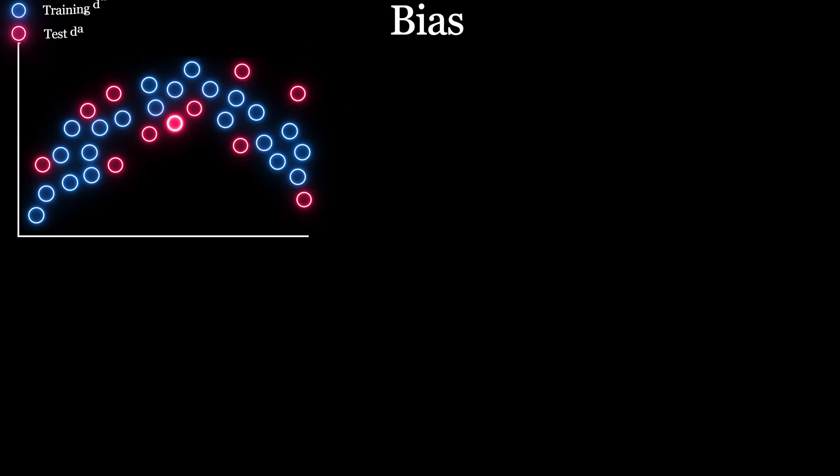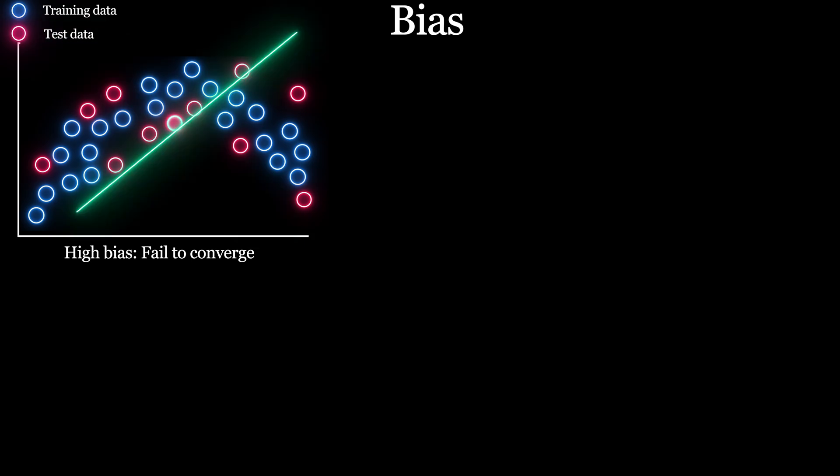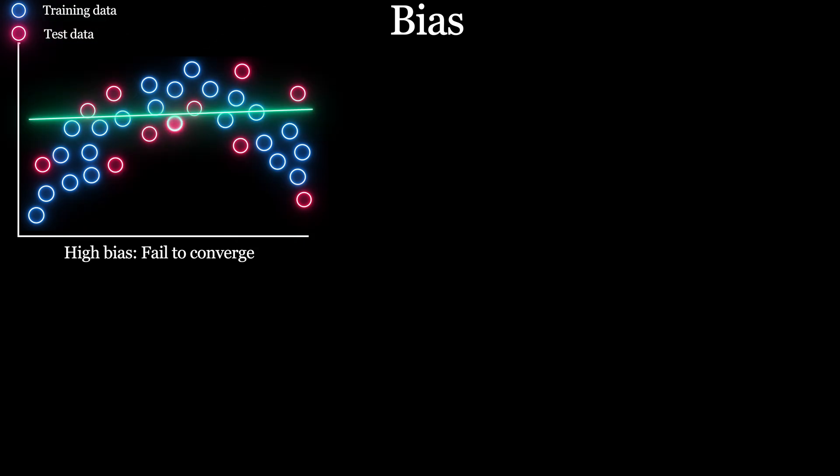A simple model has higher bias due to which it makes a lot of assumptions about the target function and fails to capture important features from training data, which is also called underfitting. Linear regression is a good example where no matter how hard you train it, you can never converge on this kind of dataset. As you can see, this can never be approximated by a straight line.